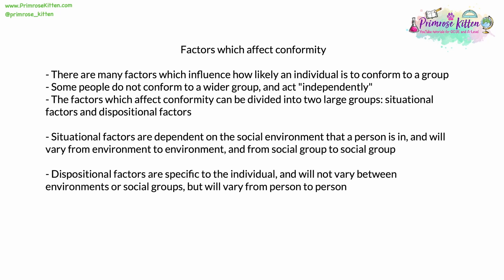There are many factors which affect conformity, influencing how likely it is that an individual will conform to a wider group — some people do not conform at all and act completely independently. These factors can be divided into two large subsections: situational factors, which depend on the social environment and vary from group to group, and dispositional factors, which are specific to the individual and vary from person to person but not between environments.